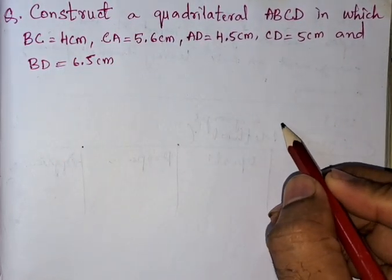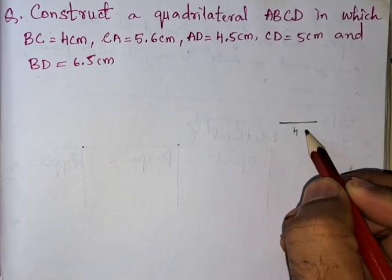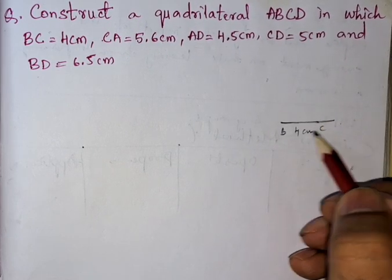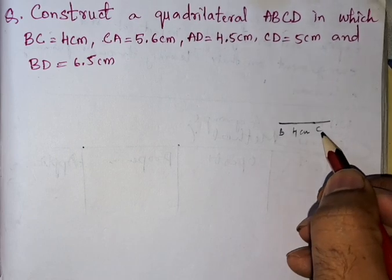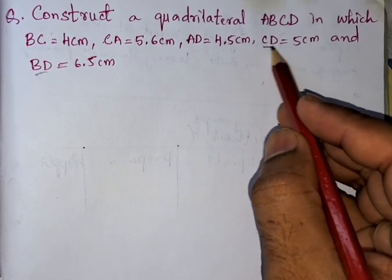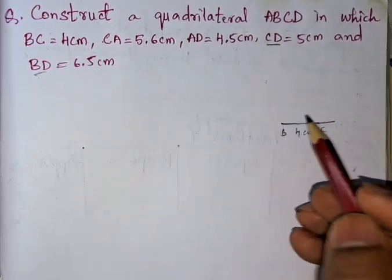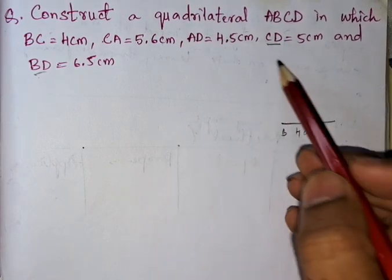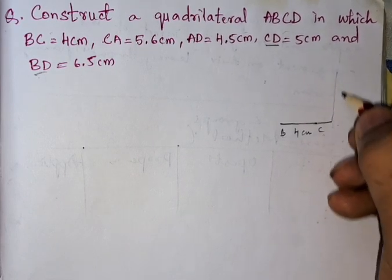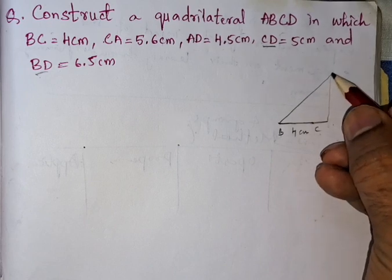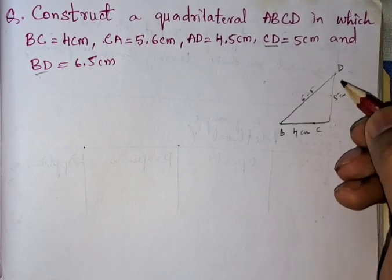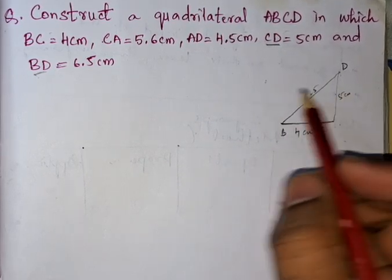BC is our base, 4 centimeters. From B and C we need to look for the same point. We have BD and CD, both sharing point D, so we can go for this. From C to D it is 5 centimeters, and from B to D it is 6.5 centimeters. This gives us point D.